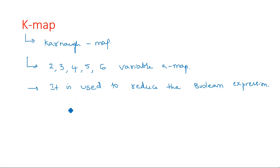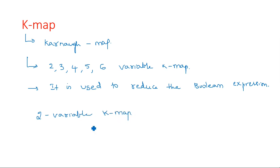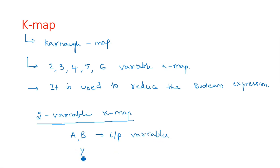Simply we can derive the reduced boolean expression. If you are having variables like two, three, or four — for example, two-variable KMAP means A, B; three-variable KMAP means A, B, C. In this video I will tell you about the minimization of a two-variable KMAP. In a two-variable KMAP we have two variables A and B as input variables, and we have an output like Y.